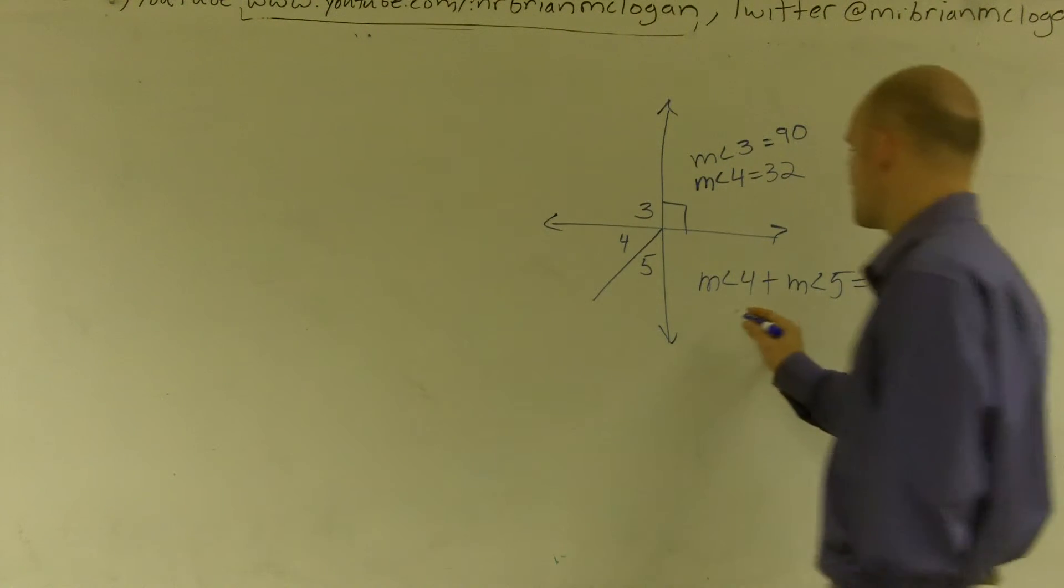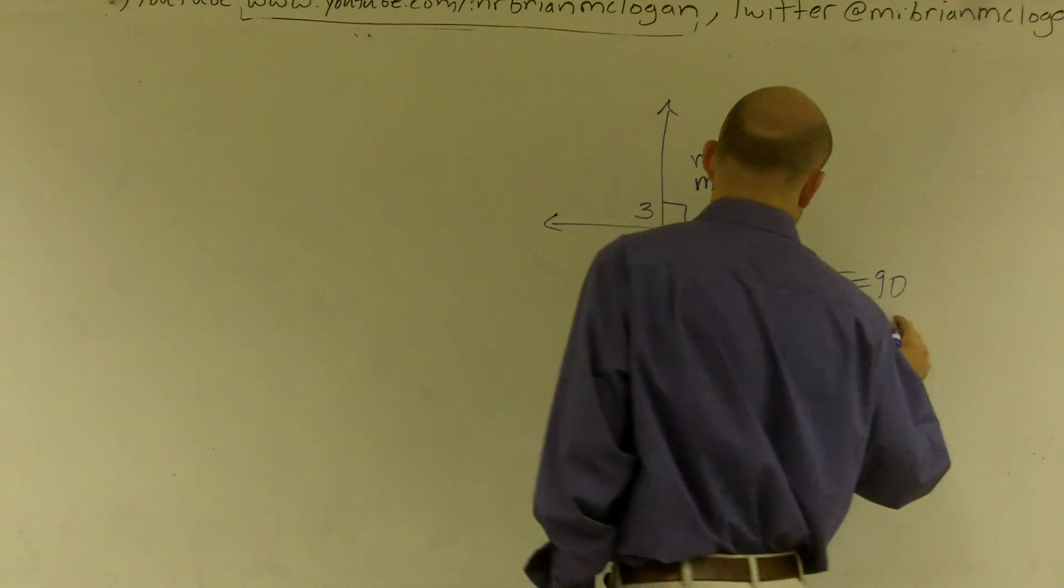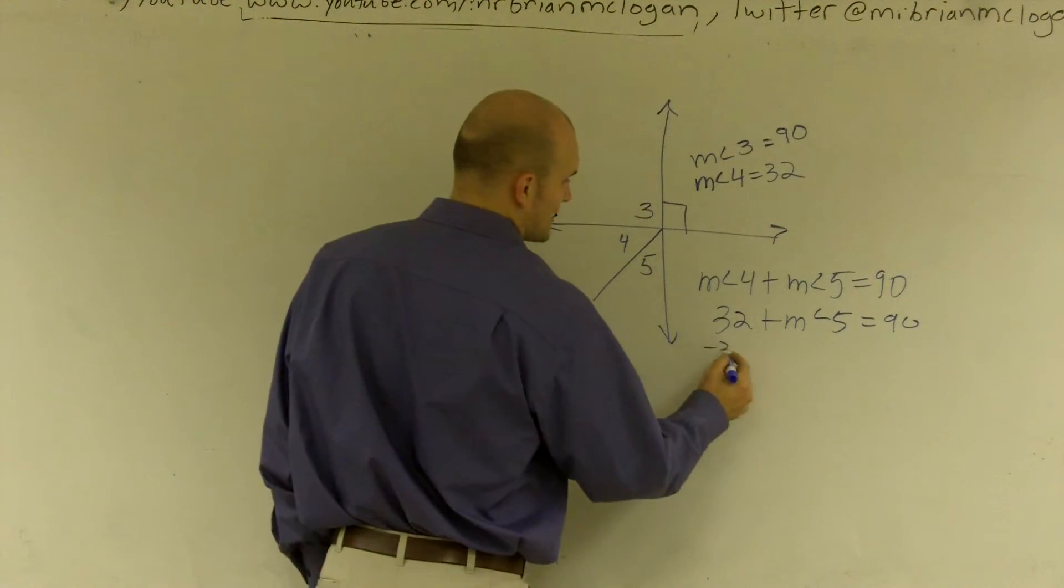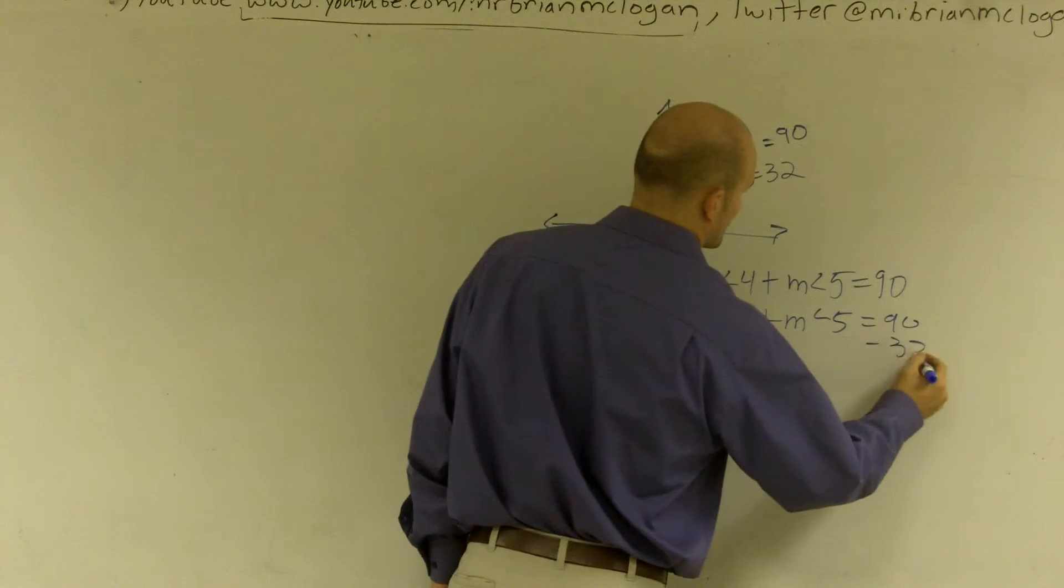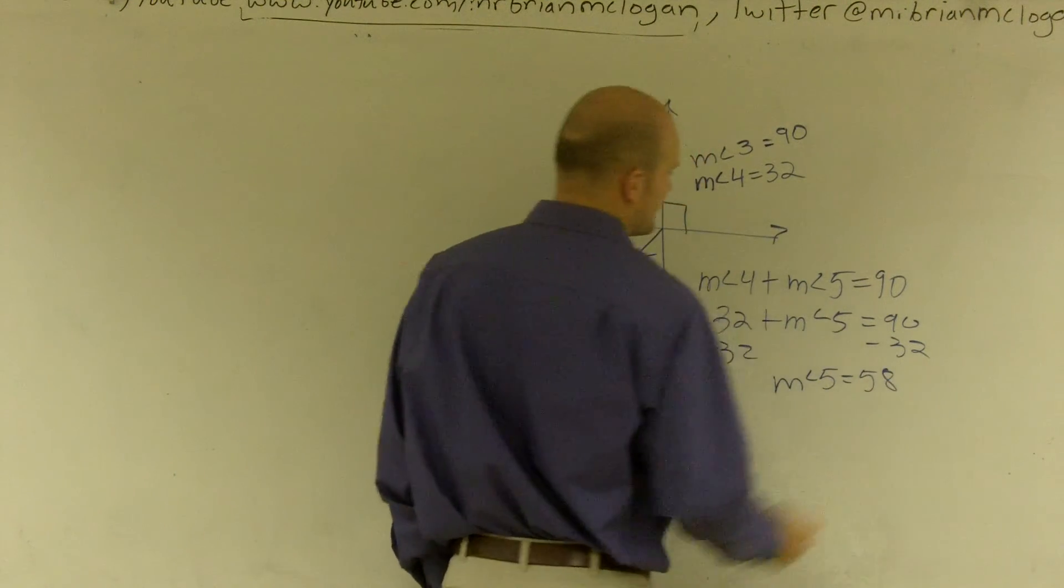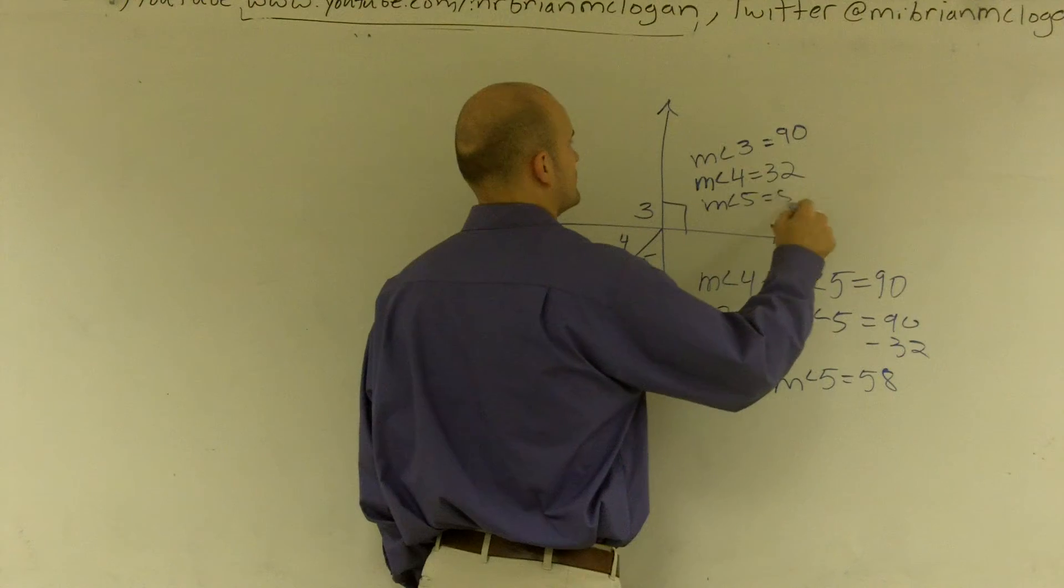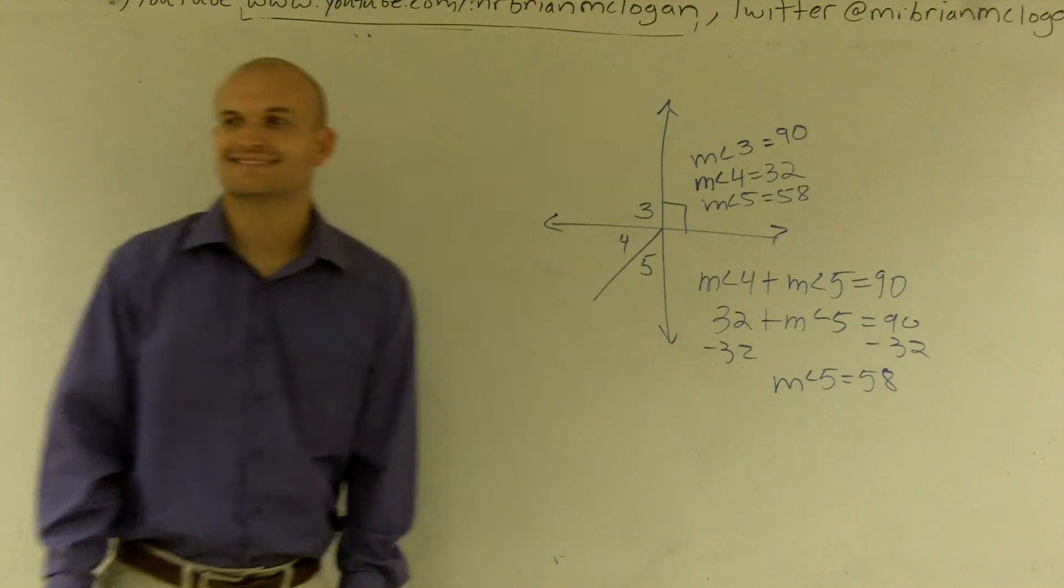Well, measure of angle 4 is 32, plus measure of angle 5 equals 90. So I subtract 32, and I get measure of angle 5 is equal to 58. And there you go.